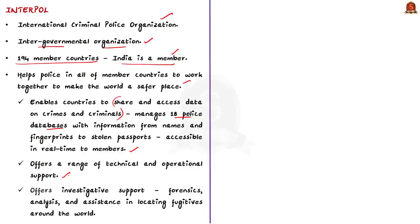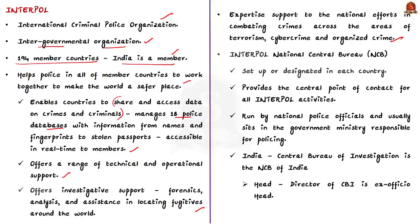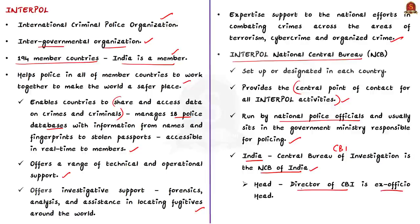Interpol offers investigative support such as forensics, analysis, and assistance in locating fugitive escapees around the world, helping combat crimes across terrorism, cybercrime, and organized crime. In each country, an Interpol National Central Bureau is set up as the central point of contact for all Interpol activities, run by national police officials usually sitting in the government ministry responsible for policing. In India, the Central Bureau of Investigation (CBI) is Interpol's National Central Bureau of India, and the Director of CBI is its ex-officio head. Try to also know the two new services created by Interpol discussed in this news article.